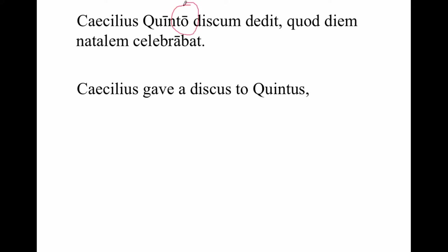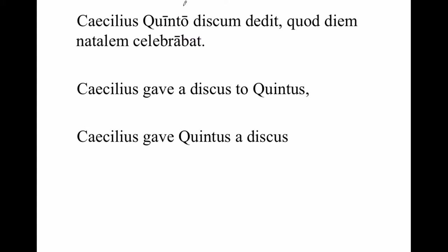This is our dative singular ending for a second declension noun or name. We can translate dative with the preposition 'to.' Sometimes you'll want to translate dative with the preposition 'for.' When dative is used for what we call indirect object, another perfectly acceptable translation instead of 'Caecilius gave a discus to Quintus' would be 'Caecilius gave Quintus a discus.' In Latin, there's only one way to express this concept, and the preferred word order is nominative subject first, then the dative, then the direct object in the accusative, followed by the verb.